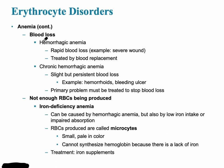One type of anemia is hemorrhagic anemia, where there is sudden red blood cell loss, as in the case of a stab wound. There could also be chronic hemorrhagic anemia, perhaps due to something like hemorrhoids or a bleeding ulcer.